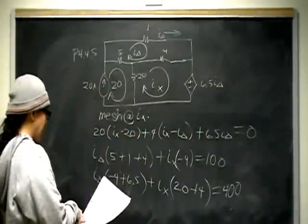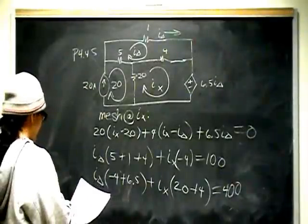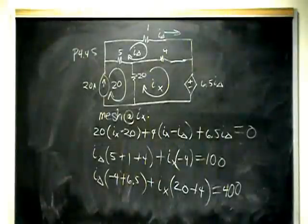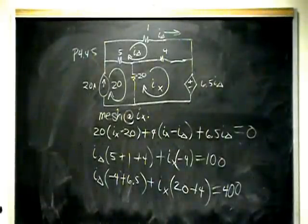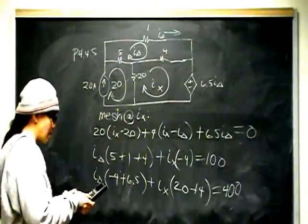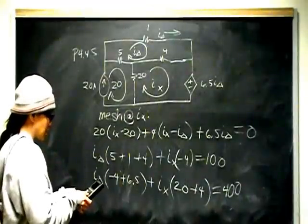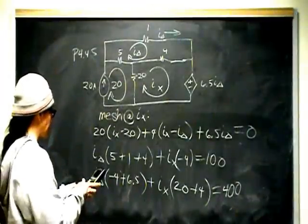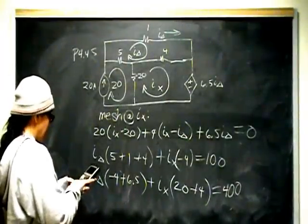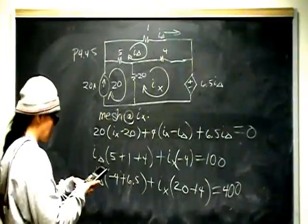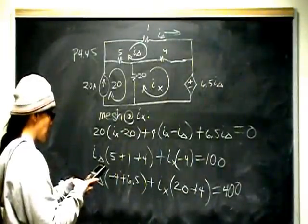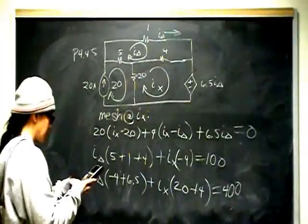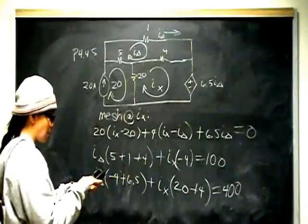So let me double check I sub x, 20 and 4. I sub delta negative 4 and 6.5. And as a triple check because I'm horrible at making mistakes, I'm doing it right on paper and then typoing the board. So I'm going to start doing this because the last thing I want to do is confuse you guys further. So now I'm going to do 5 plus 1 plus 4. Two equations, two unknowns. Negative 4 and then 100. Negative 4 plus 6.5, 20 plus 4 and 400. Solve.